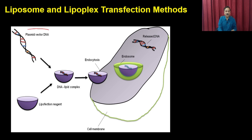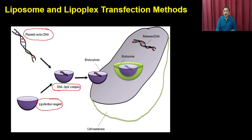You have a plasmid DNA and you have the lipofectamine reagents; you mix them together and they form a DNA-lipid complex which you then add to the cell. It settles onto the cell and is taken up by the process of endocytosis. Once it reaches into the endosome — this vesicle-bound structure — the DNA is released and enters the nucleus to participate in transcription and translation.